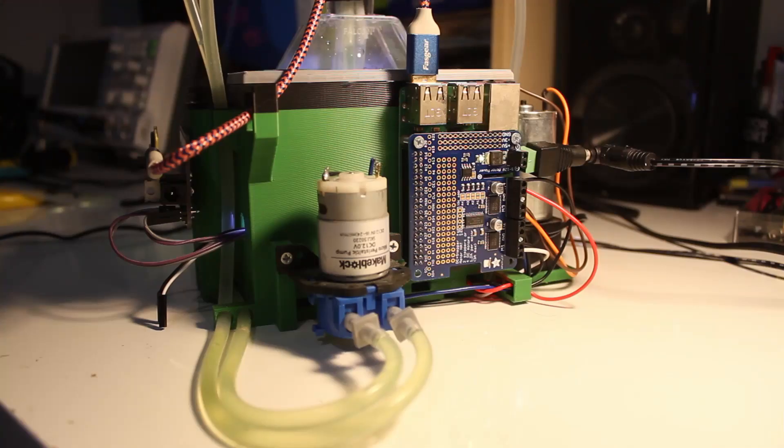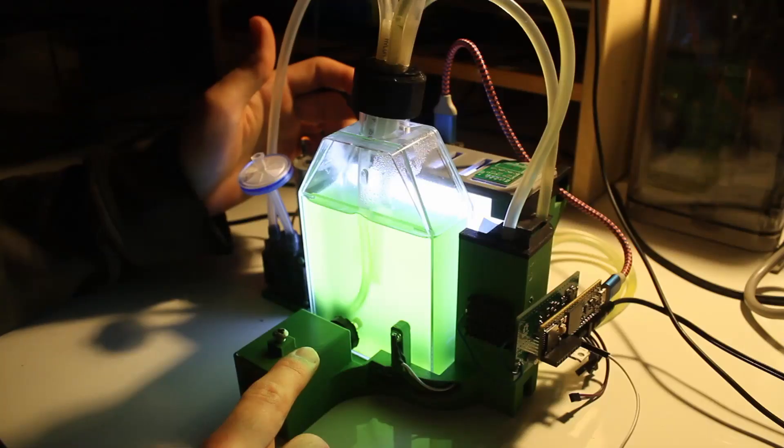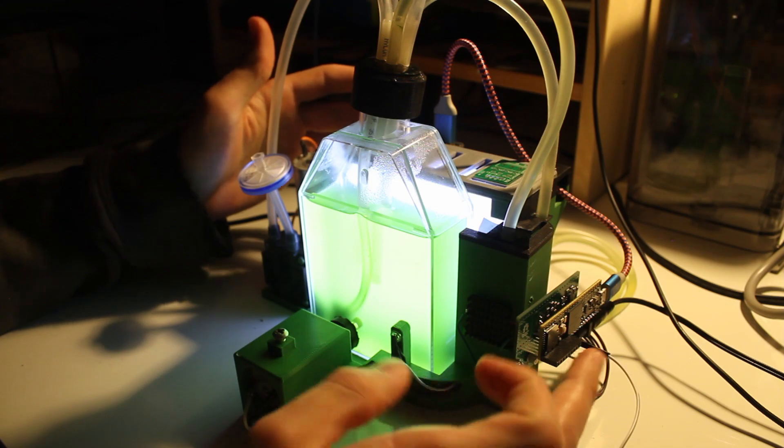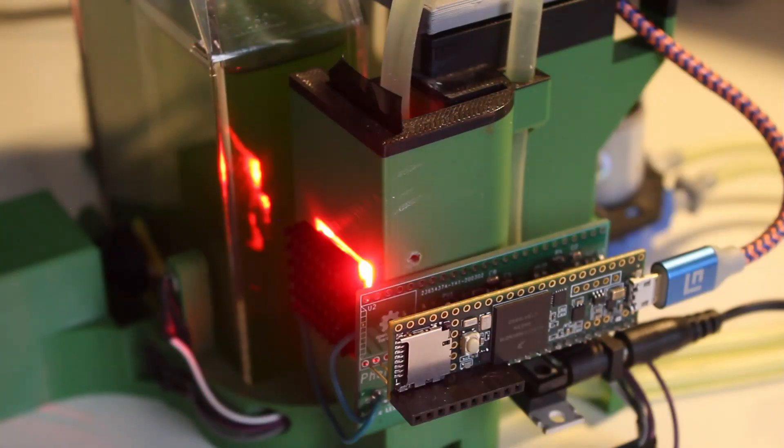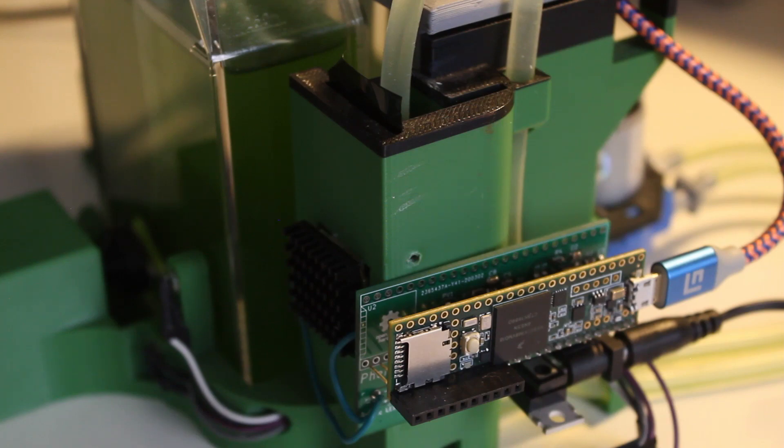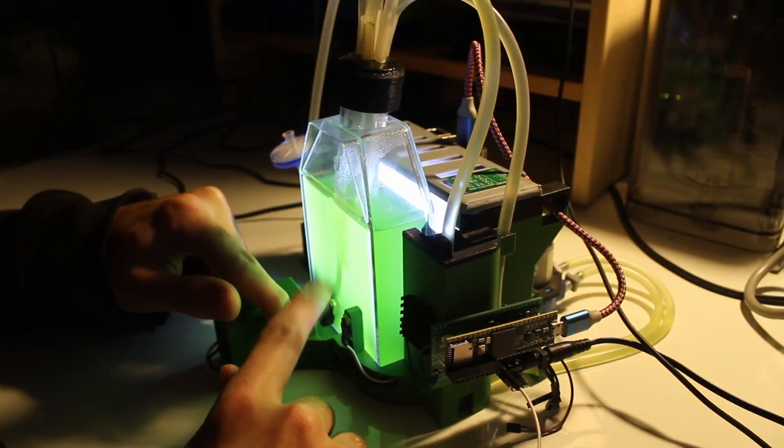It consists of a Raspberry Pi computer located on the back of the 3D printed housing. This is connected to a microcontroller on the right hand side here, which is running a chlorophyll fluorometer for measuring photosynthesis in the microalgae.